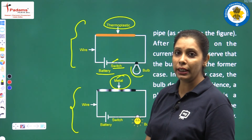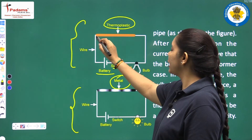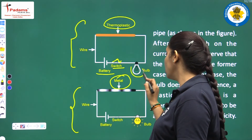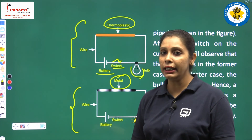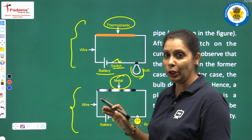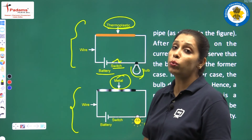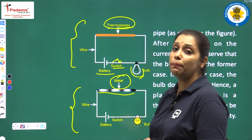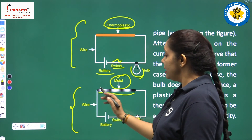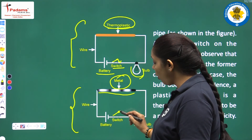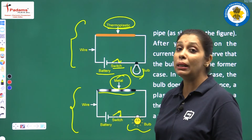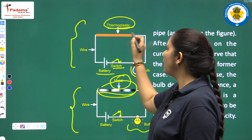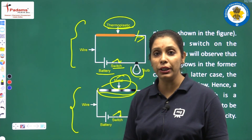First, the switch is in off condition and the circuit diagram is ready. Here the connectivity between the two wires is thermoplastic. When we switch on, the bulb does not glow — this indicates that thermoplastic is a poor conductor of electricity. Then we do the same with a metal pipe: as we switch on, the bulb starts glowing. That means the metal is a good conductor of electricity.